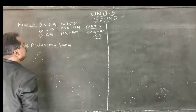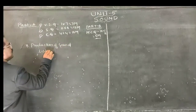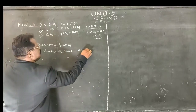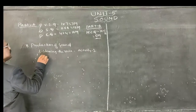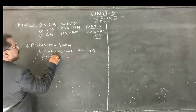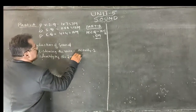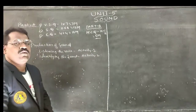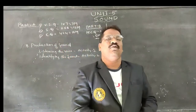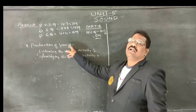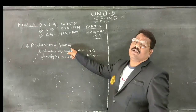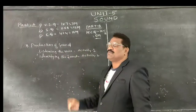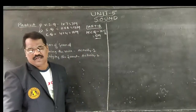Within the production of sound, the first activity involves listening to voices — Activity 1. Activity 2 covers identifying different types of sounds. Production of sound can be identified in two different ways: first is listening to the sound, and second is identifying the sound. Activity 1 explains about listening to sound, and Activity 2 gives explanation about identification of the sound.